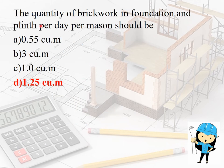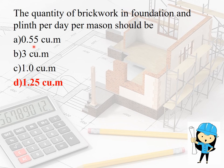Important quantity of brickwork per day values: brickwork in foundation and plinth = 1.25 m³ per day; brickwork in superstructure = 1.0 m³ per day; brickwork for RCC work = 3 m³ per day; brickwork in arches = 0.55 m³ per day. For 12 mm plaster, the output is 8 m² per day. These values are very important for competitive exams.